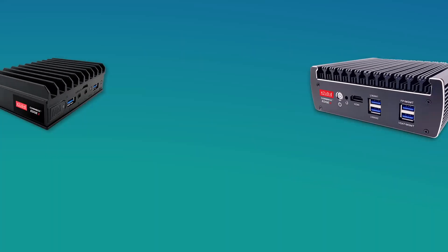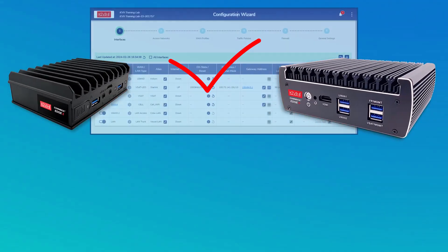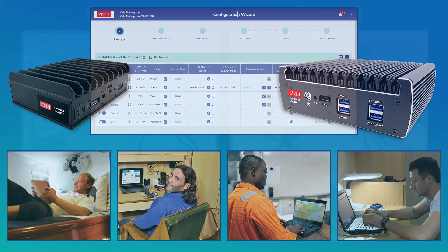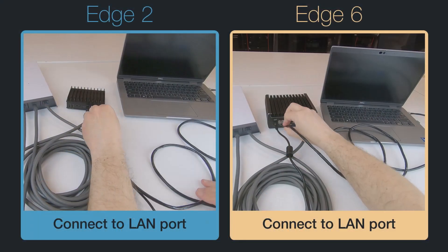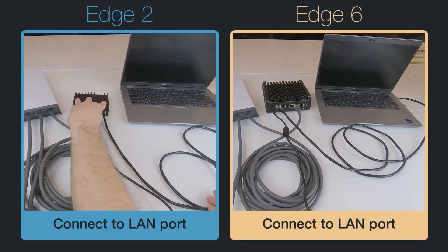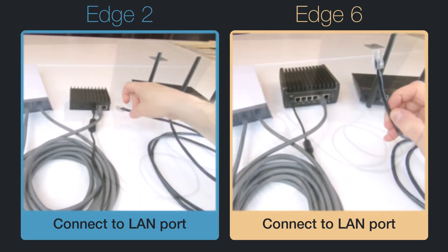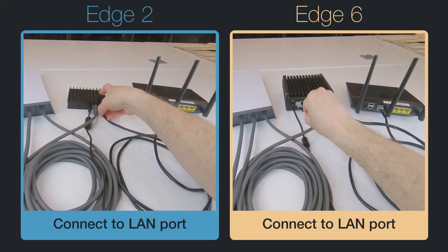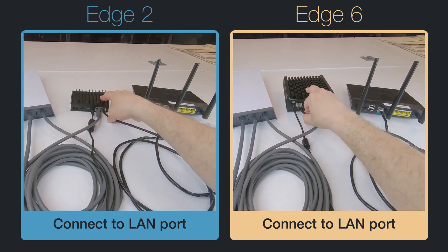Once the Combox Edge is configured to meet your specific needs, it's ready for use. You can either connect a single computer to the Edge's LAN port, or connect your Wi-Fi router or other device to enable access throughout your vessel.